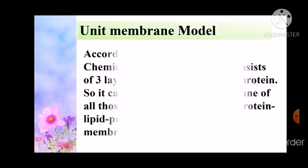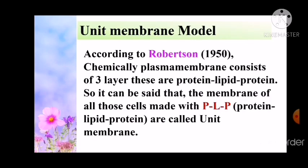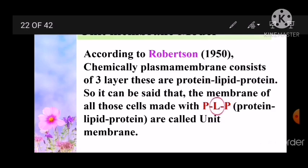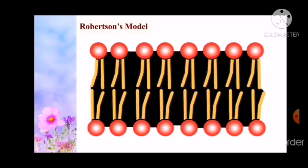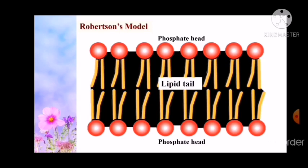Unit membrane model. According to Robertson in 1950, chemically the plasma membrane consists of three layers: protein, lipid, protein. So it can be said that the membrane of all cells is made of protein-lipid-protein, meaning PLP, which is called the unit membrane. In this slide, you can see Robertson's unit membrane model. The round-shaped head is made of phosphate and the tail is made of lipid. The lipid tails stand face to face and the protein heads are in the opposite direction.